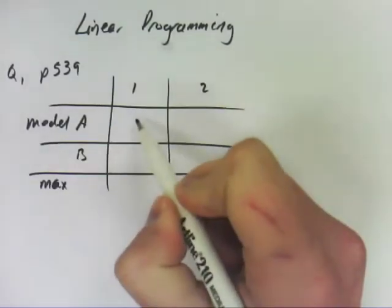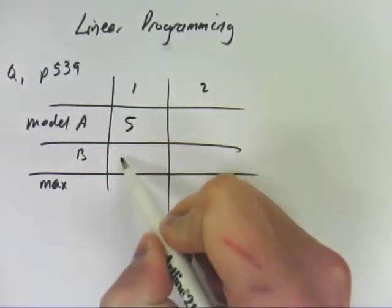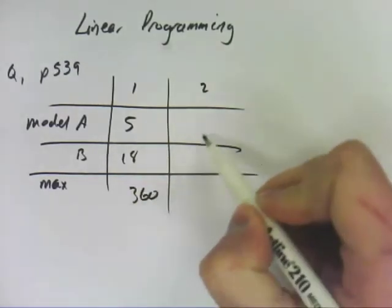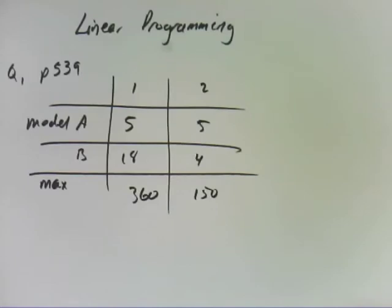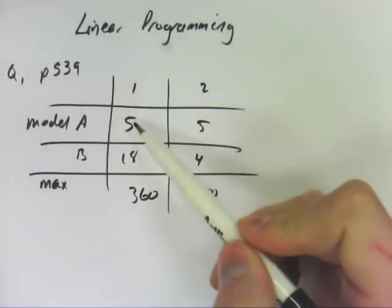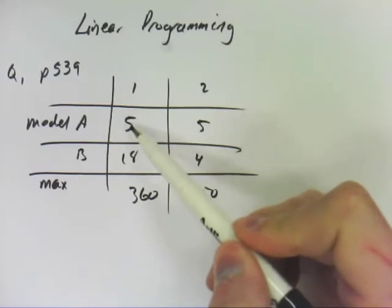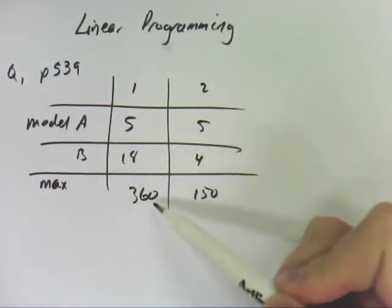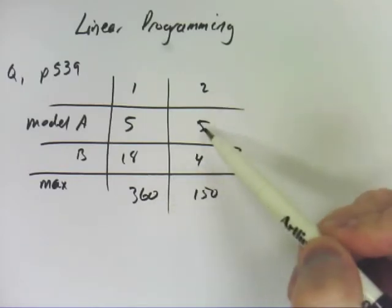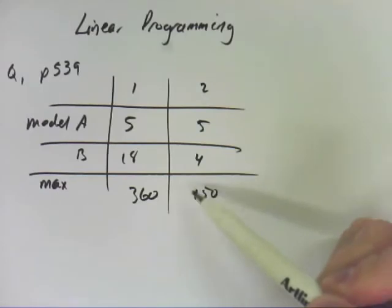So 5, 18, 360, 5, 4, 150. Okay so what this means is that worker 1 takes 5 minutes to work on model A, 18 minutes to work on model B and has a total of 360 minutes available to be spent. Worker 2 is 5 minutes on A, 4 minutes on B and only has 150 minutes to be working.